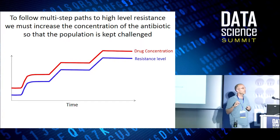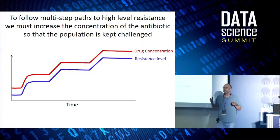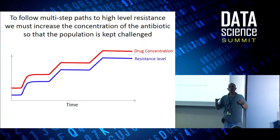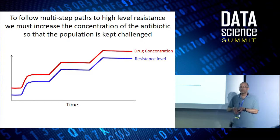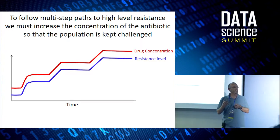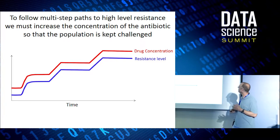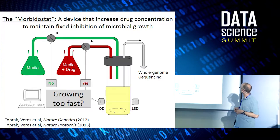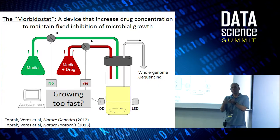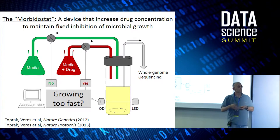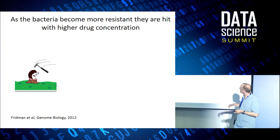I want to show you two devices we've developed — benchtop evolution devices that allow us to watch evolution in real time. In one device, we ramp up antibiotic concentration over time in a well-mixed environment. It's a computer-controlled system where the computer watches the bacteria: if they're growing too well, it throws more drug on them; if they're almost dying, it dilutes the drug. It keeps them constantly challenged, they evolve resistance, and it keeps increasing the antibiotic concentration.